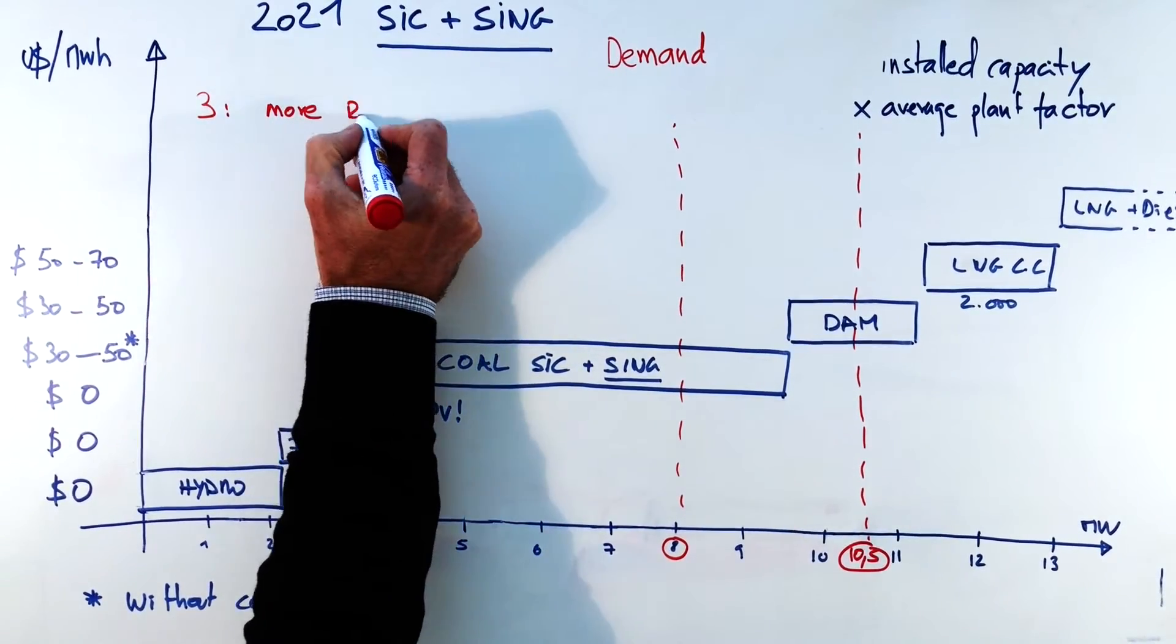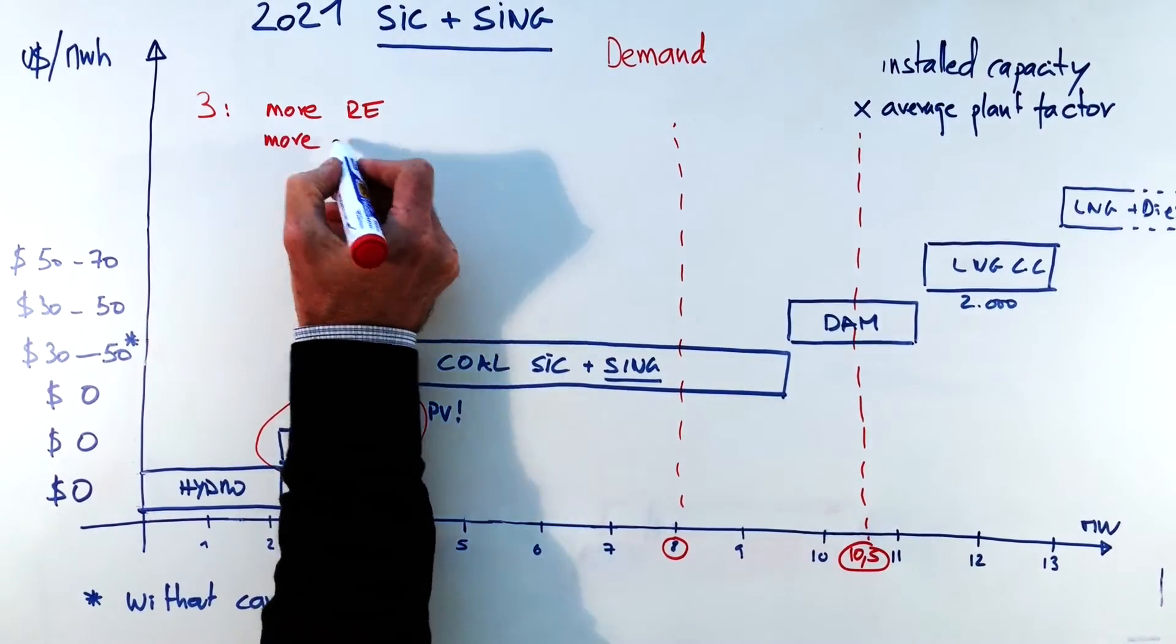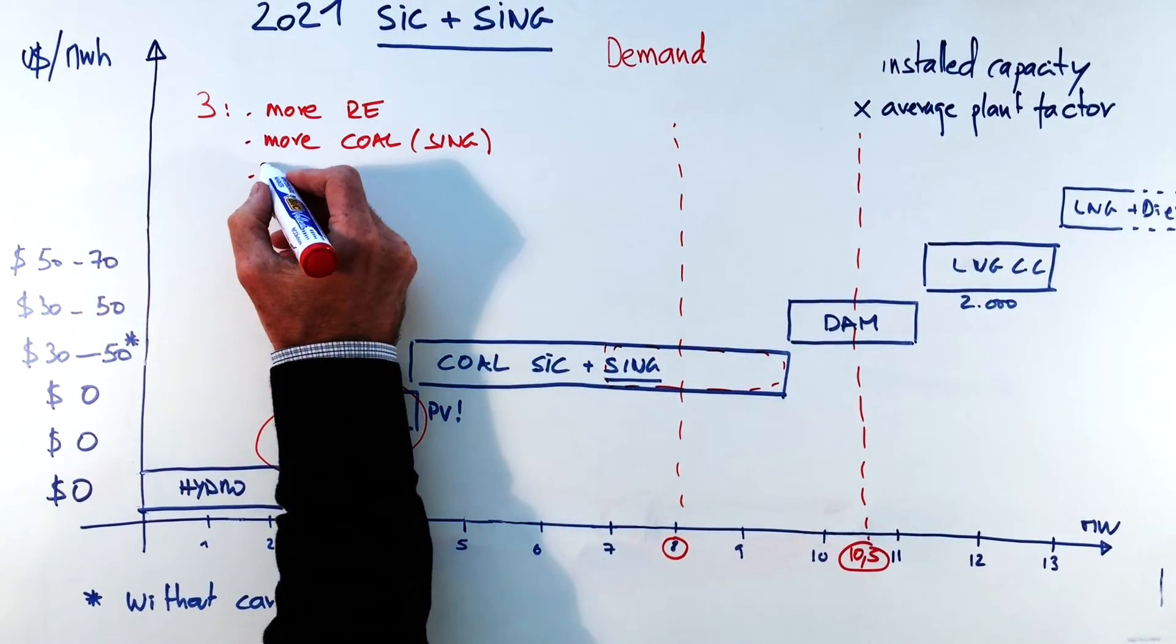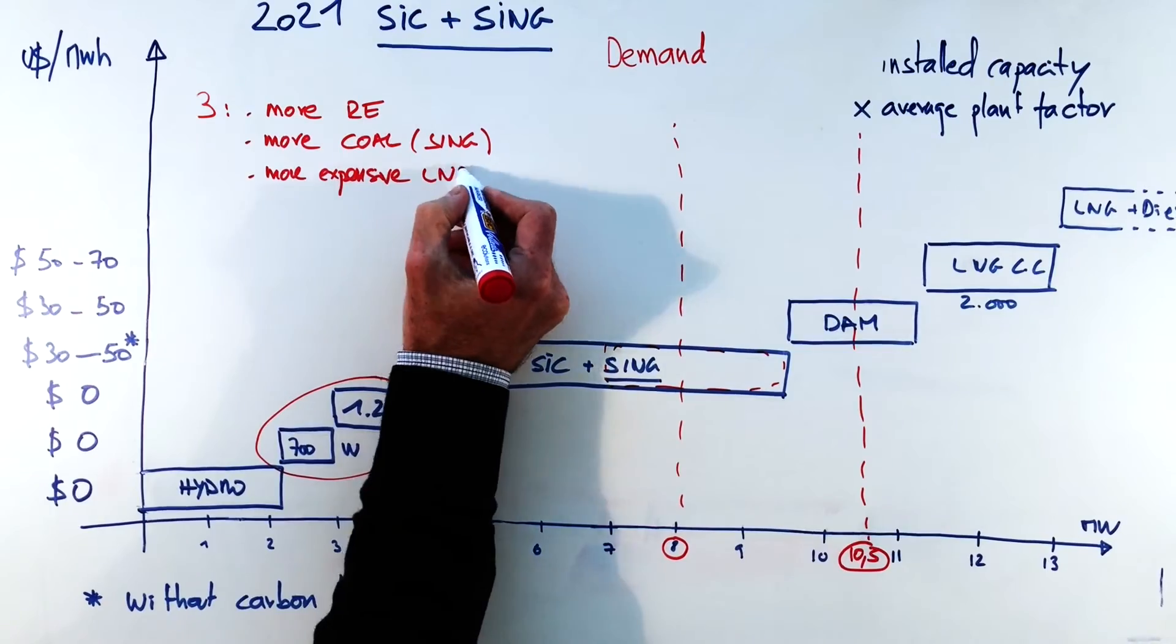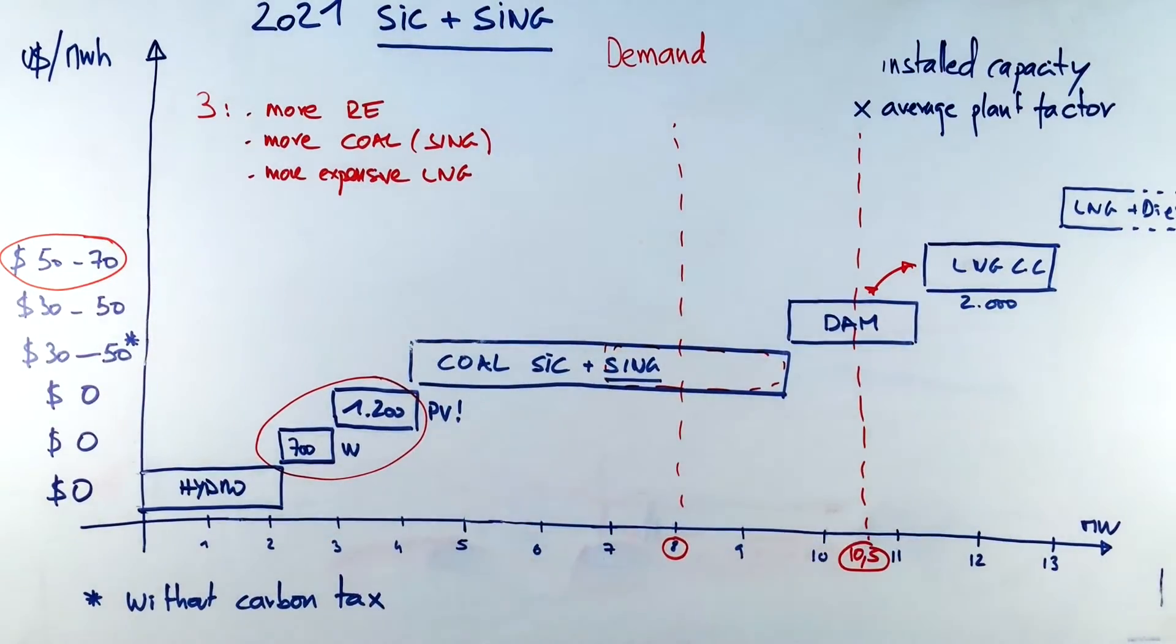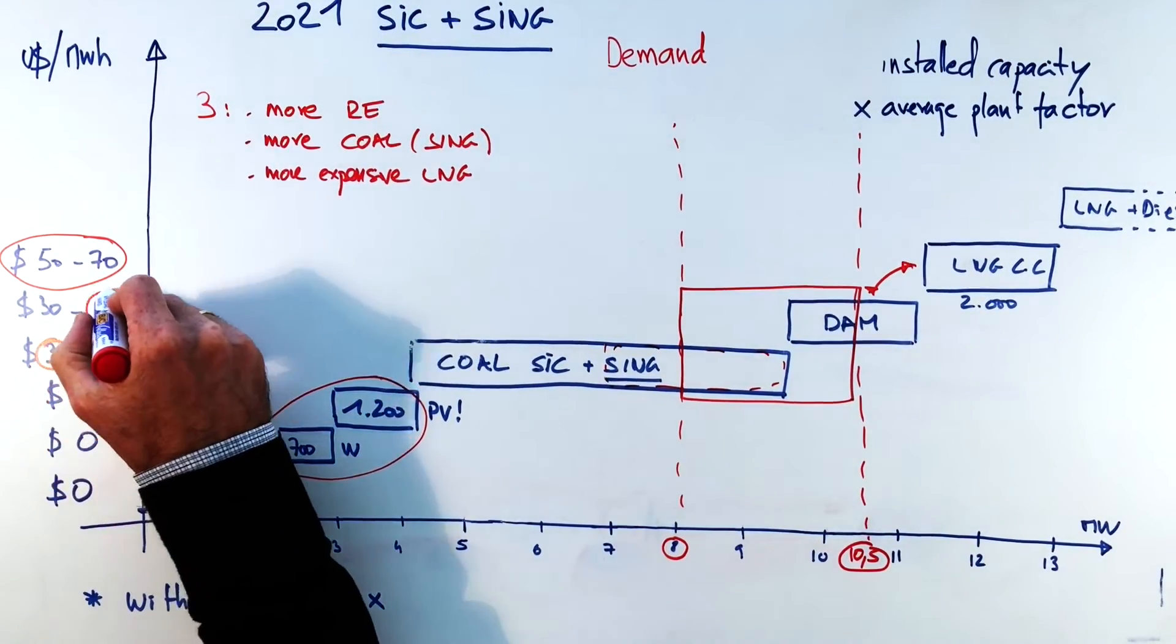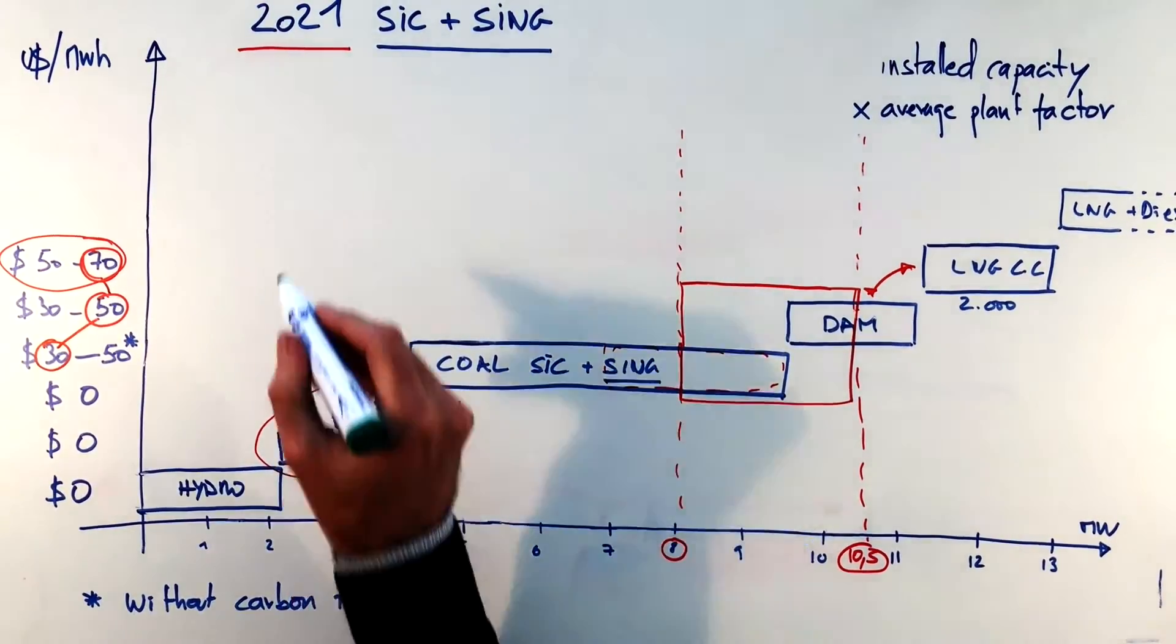So three things have changed between 2016 and 2021. More renewable, much more renewable, more coal because we have 2,000 megawatts coming from the SING that are going to be plugged into the SIC and more expensive fuel prices if we believe the International Energy Agency expectations. So with this new configuration demand is going to be expected to be fulfilled with coal, dam and eventually LNG in peaks. So prices would be oscillating between 30, 50 or eventually 70.